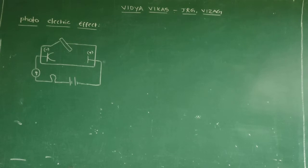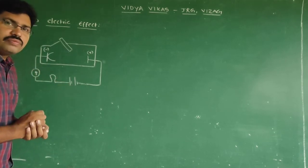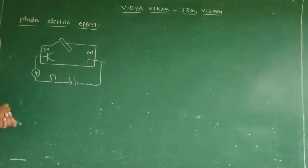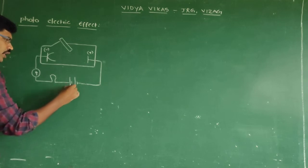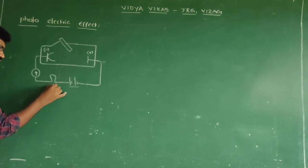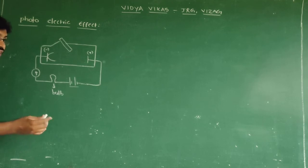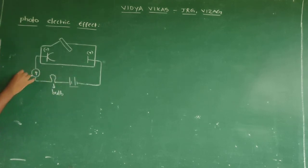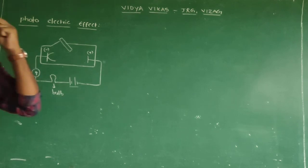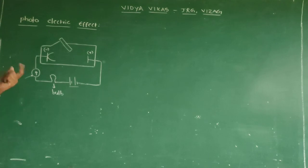Let me come to a diagrammatic representation of photoelectric effect. We have two electrodes - one is the cathode and one is the anode - and both are connected to a battery. Also, a bulb is placed in the circuit to check whether current is produced or not. And an ammeter is also there to measure the amount of current produced in the circuit.